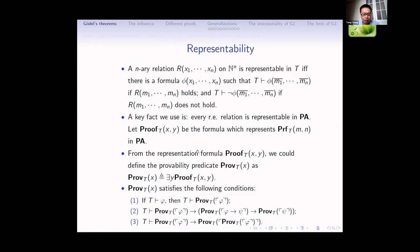In the proof of G1, Gödel used a very key fact: that every RE relation is representable in PA. So we have shown that this binary relation is RE, so we have a formula which represents this binary relation. From this representation formula, we can define the provability predicate Prov_T(x): we say x is provable in T, which means that there is a y such that y is the code of a proof of the formula with code x.